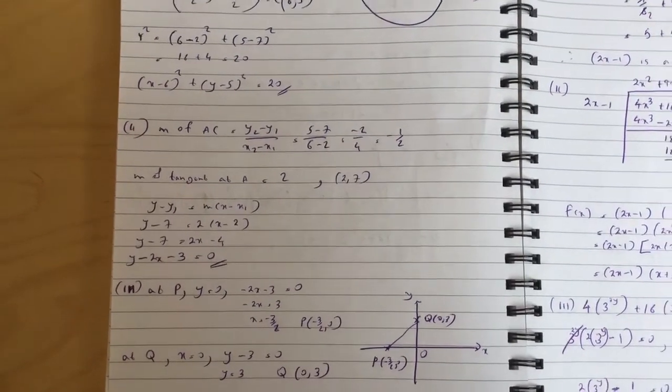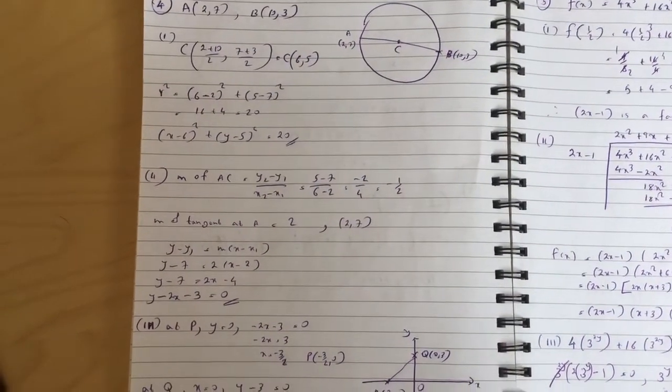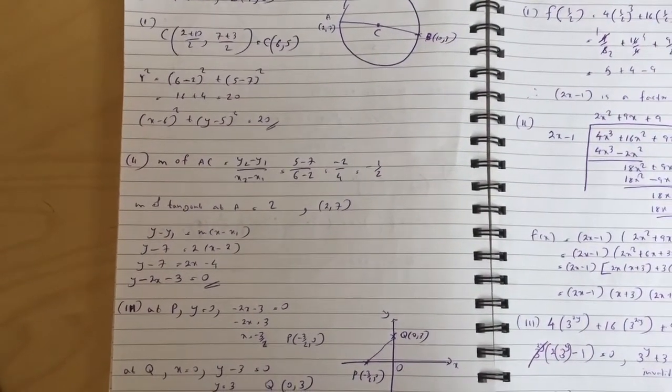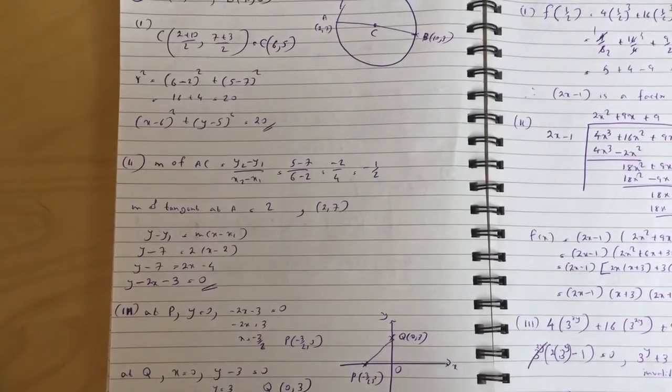You get the tangent, so gradient of AC is minus one-half, gradient of the tangent at A is 2, and use the formula to get the equation which is y = 2x - 3.